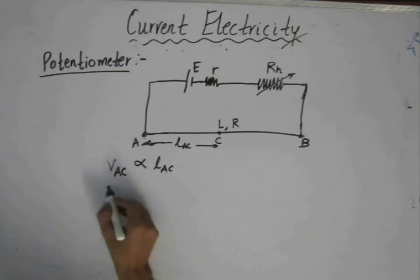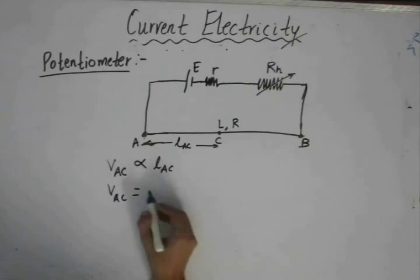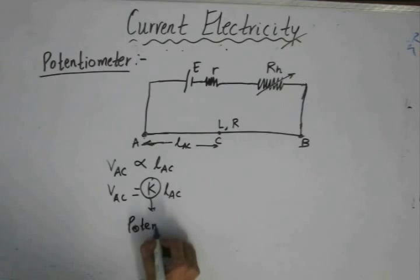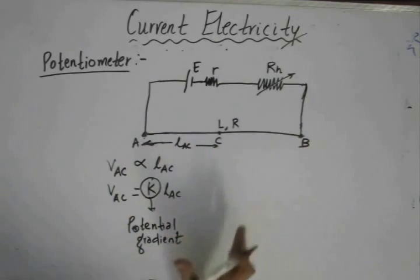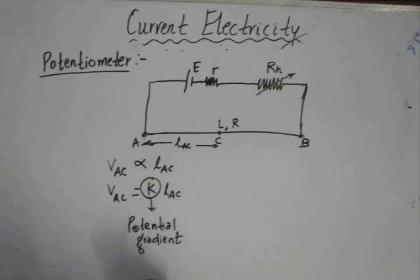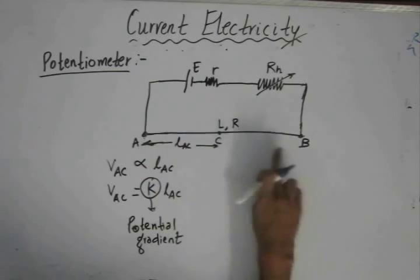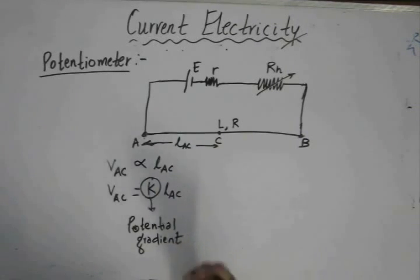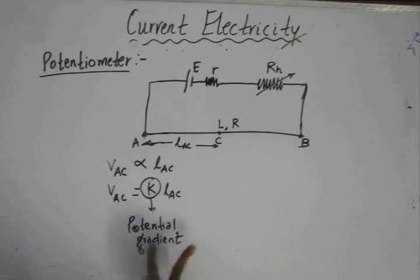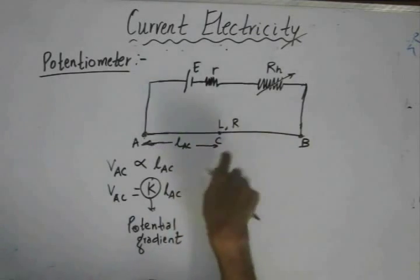If we remove the proportionality sign, we introduce a proportionality constant known as the potential gradient. The potential gradient indicates how the potential changes with distance — how the potential varies as we change the length along the potentiometer wire. For a potentiometer circuit, the potential gradient of the primary circuit will remain the same as long as we do not change the primary circuit parameters. So the potential gradient is an intrinsic property of the primary circuit.